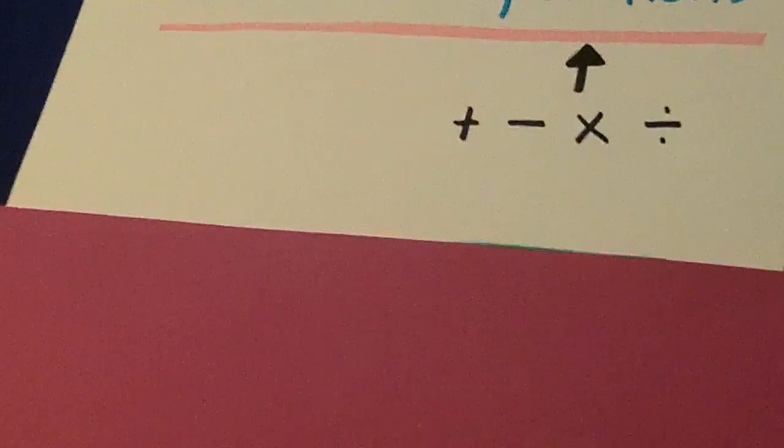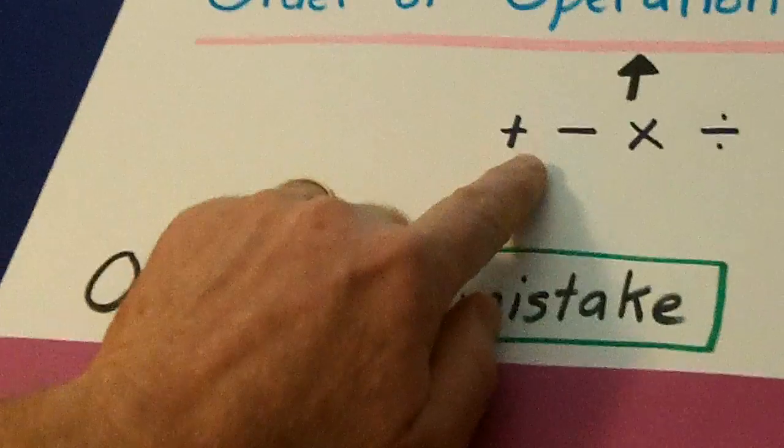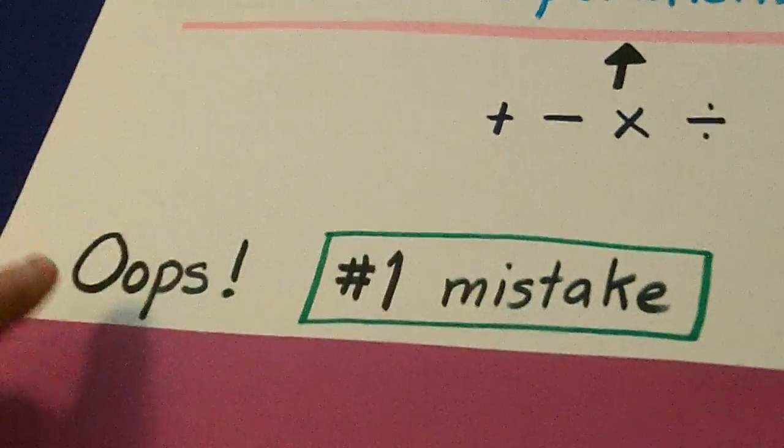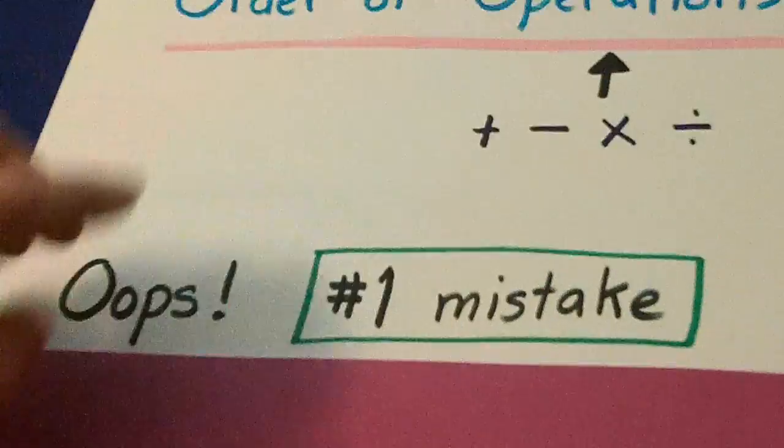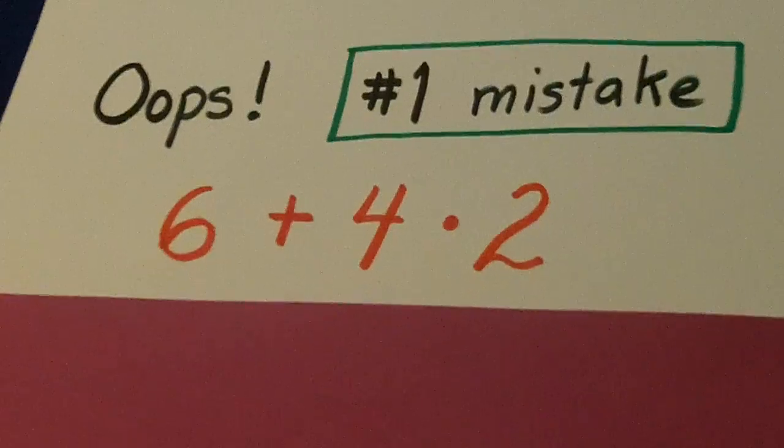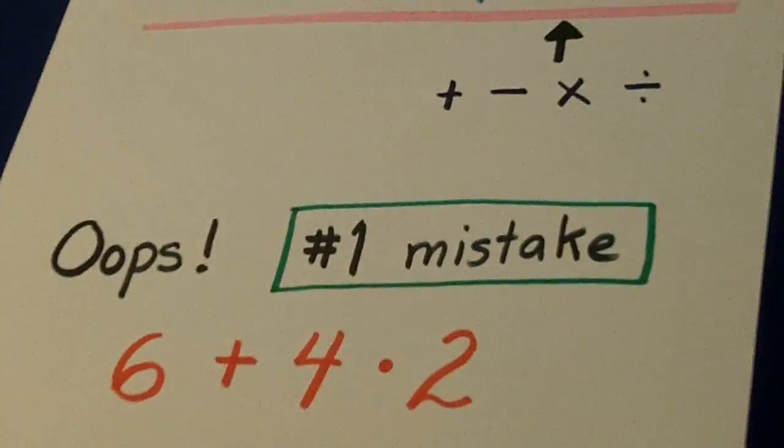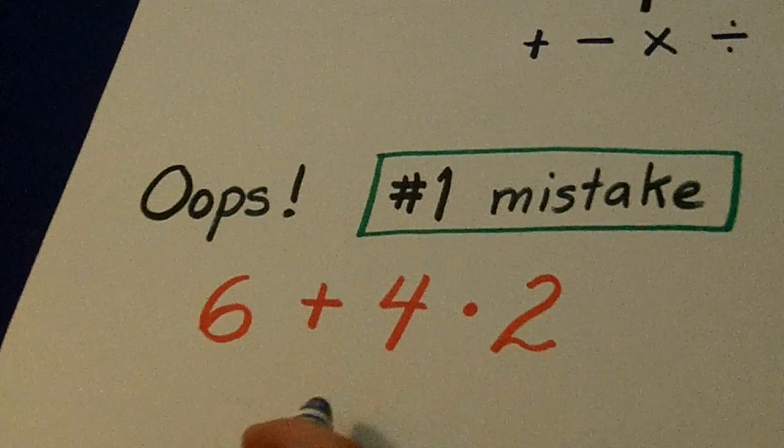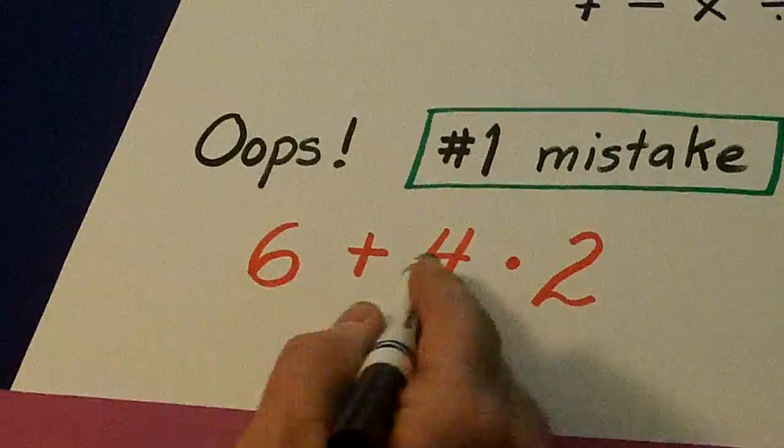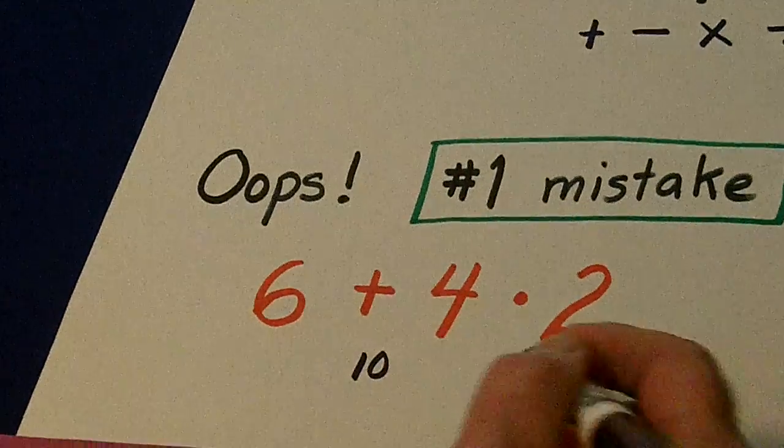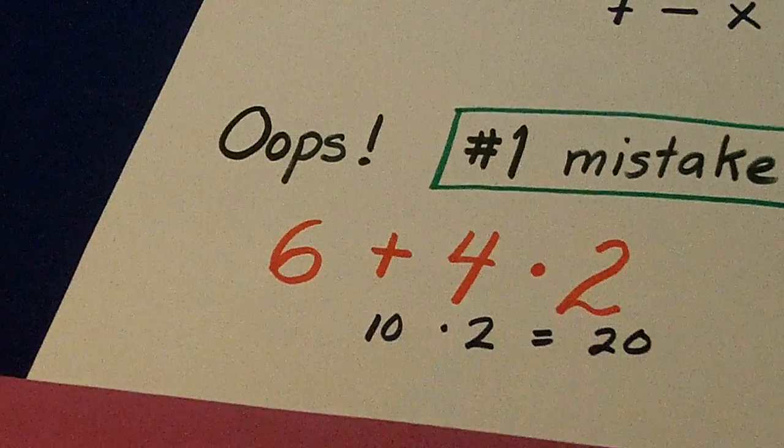Sometimes we have problems where there are several of these in an equation. And the number one mistake in order of operations will happen in problems like this. Way too many kids will jump in very quickly and go 6 plus 4 is 10, and 10 times 2 is 20.